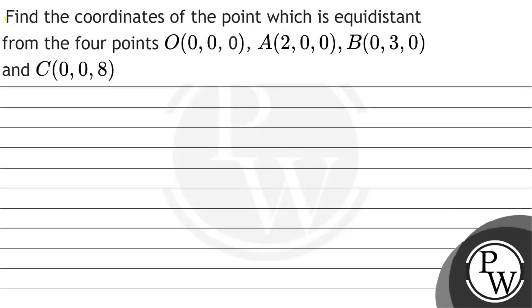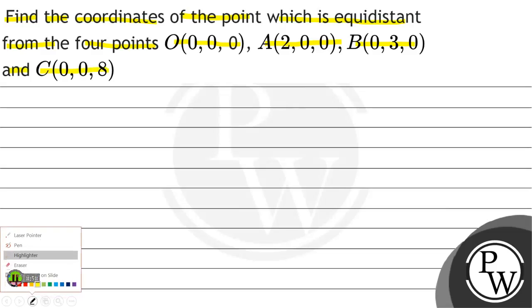Let's read the question. Find the coordinates of the point which is equidistant from the four points O(0,0,0), A(2,0,0), B(0,3,0), and C(0,0,8).